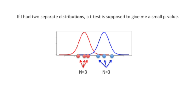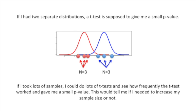If I had two separate distributions, a t-test is supposed to give me a small p-value. If I took lots of samples, I could do lots of t-tests and see how frequently the t-test worked and gave me a small p-value. This would tell me if I needed to increase my sample size or not.